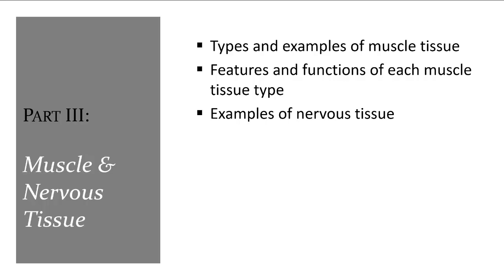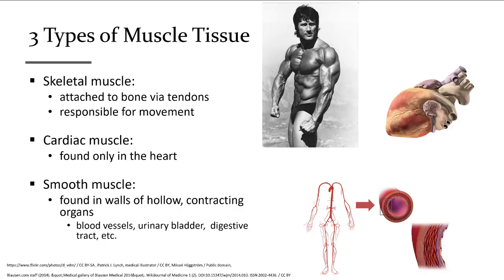Muscle and nervous tissue will also be addressed in their own independent chapters, but we'll cover them briefly here. There are three types of muscle tissue. Skeletal muscle tissue is what we use to walk and lift things — it's voluntary, attached to our bones via tendons, and responsible for movement. Cardiac muscle is only found in the heart. Smooth muscle is throughout our whole body — it churns our stomach when digesting, changes blood pressure, moves food down the esophagus while swallowing. It's involved in many autonomic processes we don't have to think about.